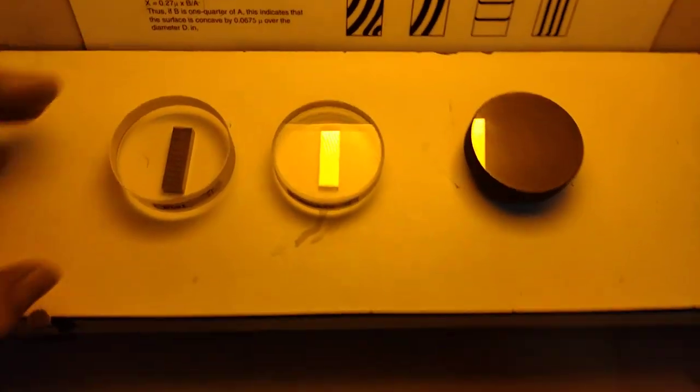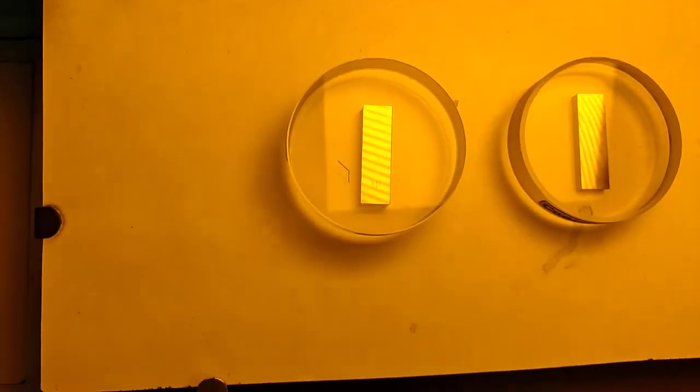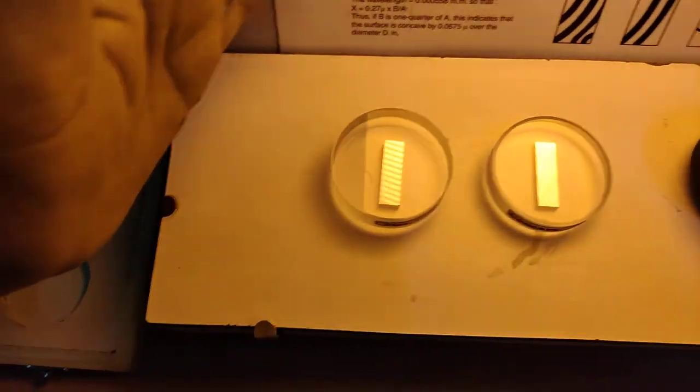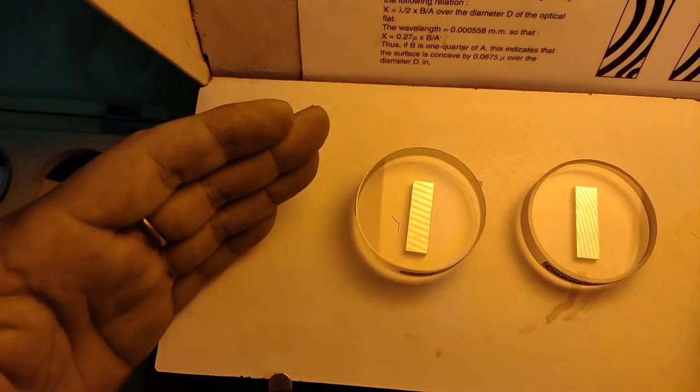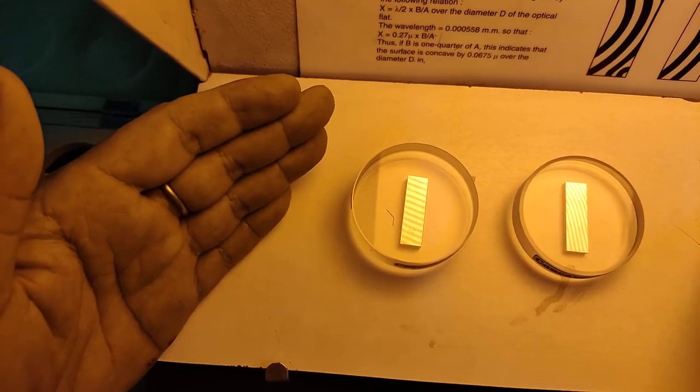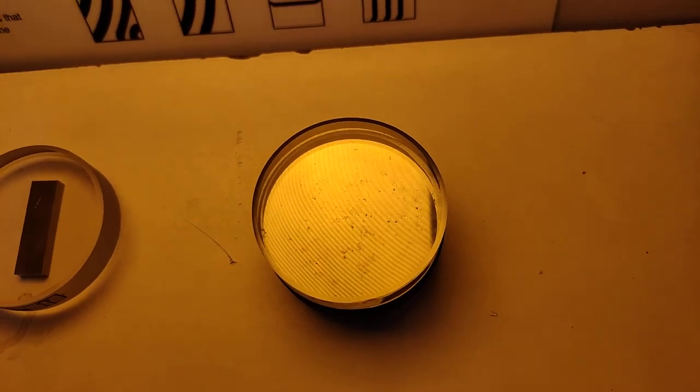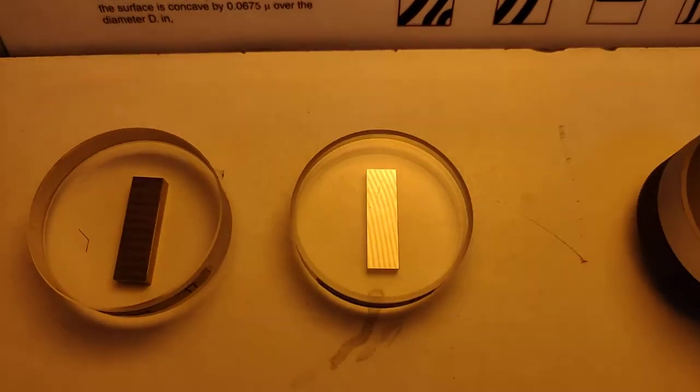Now by observing all these different optical flats, we conclude that from the fringes we can consider the surface and indicate whether it is convex, concave, or perfectly flat. So I think you understand the interferometry. Thank you.